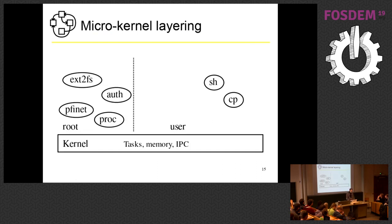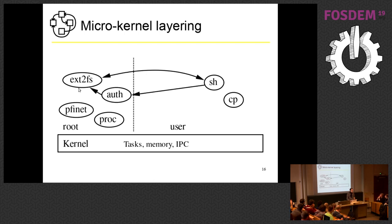To give an idea of how it works: you have the kernel, a microkernel which only handles tasks, memory, and IPC between userland programs. Then you have several root-started services like Pfinet for the TCP/IP stack, PROC to know what a process is and which PID each has, Auth which knows who is who, and X2FS the file system. When a shell starts CP, it talks with X2FS to access files, going through Auth so that X2FS knows who is asking to read a file. It checks with Auth according to what is stored on the file system for permissions.